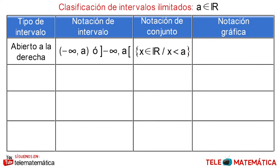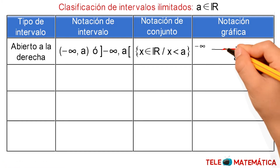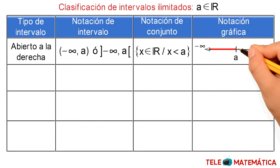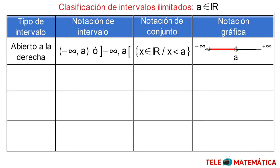Y su notación gráfica es: A se ubica en el centro, resaltamos la recta a la izquierda y dibujamos una circunferencia sin colorear en su interior, que representa su exclusión.